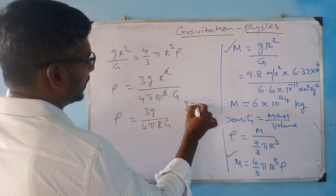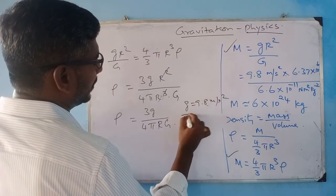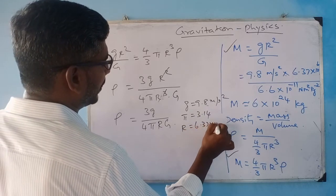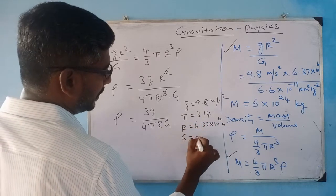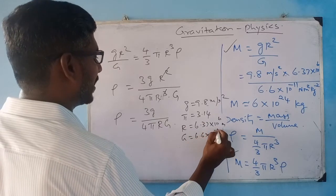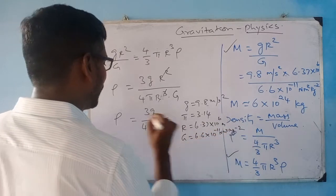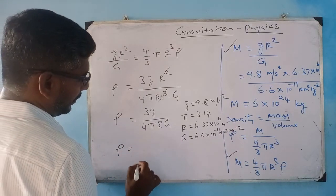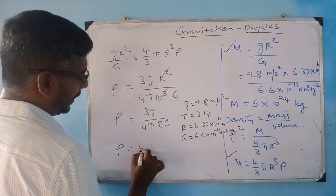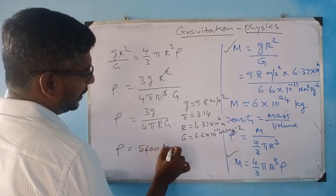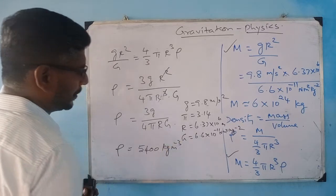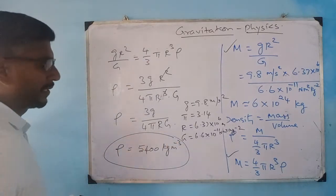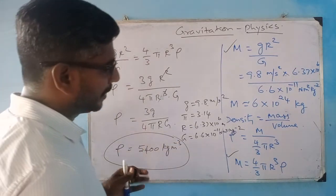Substituting the values — g = 9.8 m/s², π = 3.14, R = 6.37×10⁶ m, G = 6.6×10⁻¹¹ N·m²·kg⁻² — you will get ρ approximately equal to 5,400 kg/m³. So that is mass by volume — this is your density of the Earth. You can calculate both the mass and density of the Earth if you know the radius.